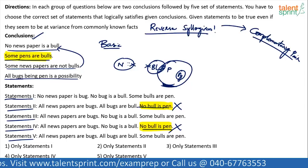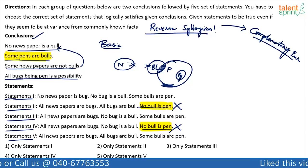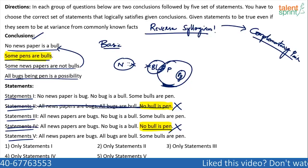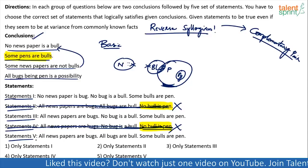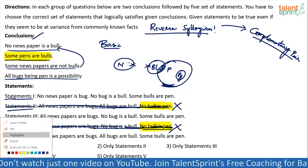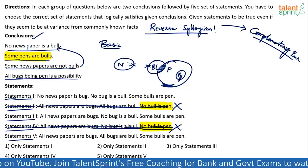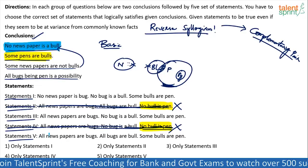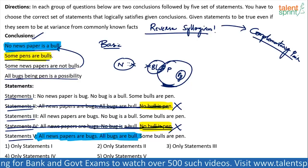Similarly, try to eliminate if any other option can be eliminated. 'No newspaper is a bull' — what is its complementary? 'All newspapers are bulls' or 'all bulls are newspapers.' Sets two and four are already eliminated — don't waste time on those. Check the remaining ones: is 'all newspapers are bull' or 'all bulls are newspapers' given somewhere? Yes, in statement five: 'all newspapers are bugs and all bugs are bull,' meaning all newspapers are bull — another complementary.